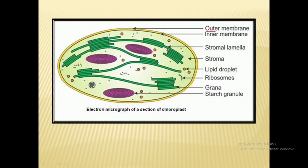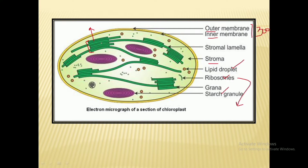As you can see, these are the two membrane layers we just talked about. The matrix of the chloroplast is known as the stroma, and within the matrix there is the presence of lipid droplets, starch granules, and ribosomes, and also the presence of grana. The collection of all these stack-like structures is known as grana, but if we look at an individual structure it is known as a thylakoid.